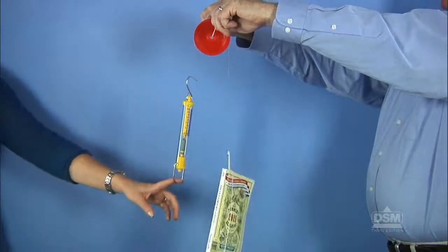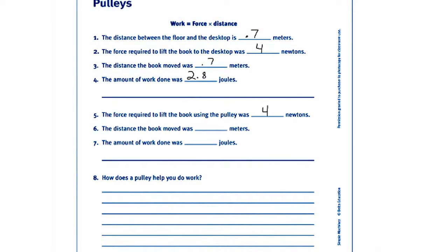Finally, have the class record the force in newtons used to lift the book and the distance that the book was lifted on the Activity Sheet. Encourage a class discussion to compare lifting the book with and without the pulley.